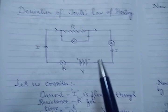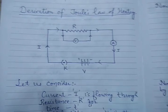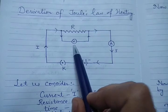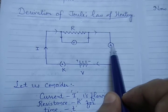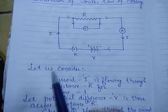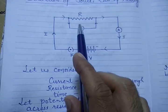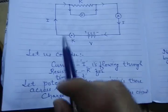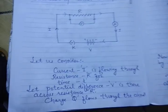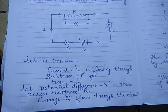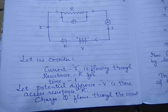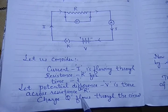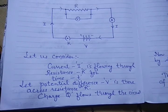For this we must consider a circuit having a battery, key, resistance, a voltmeter, and an ammeter. Let us consider the current I is flowing through resistance R for the time T, and the potential difference across the resistance is V. Also, if the current is flowing, that means charge is also flowing through it. Let Q be the charge that is flowing through the circuit for the time T.